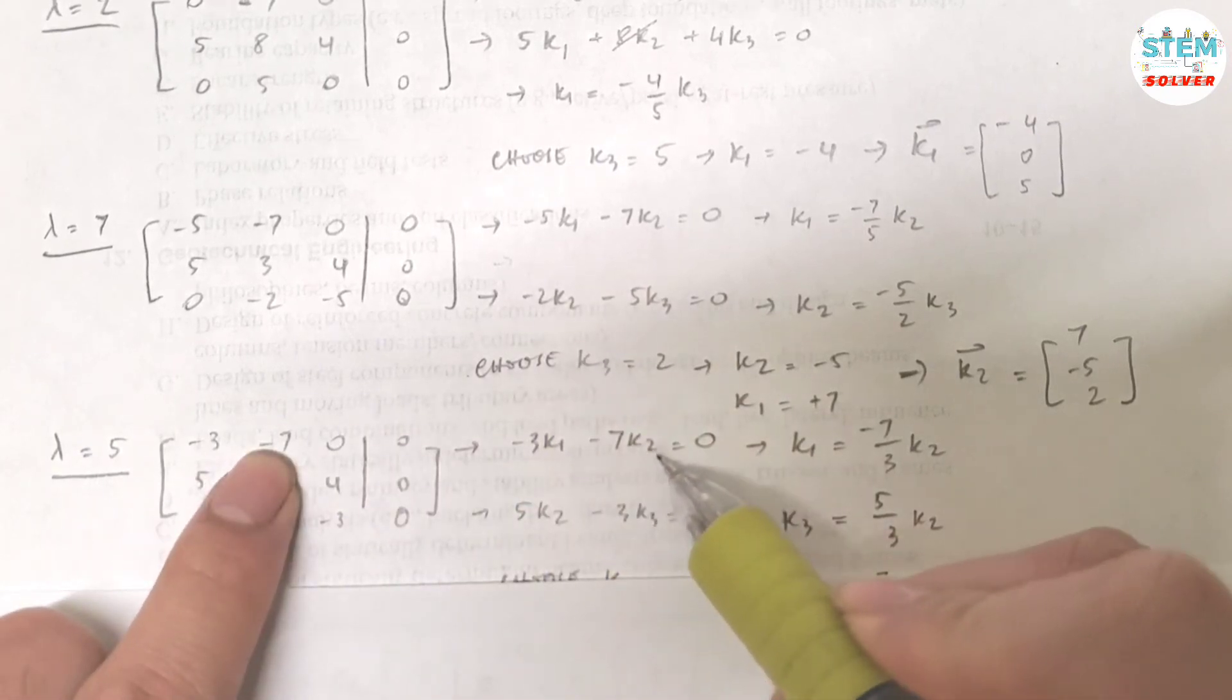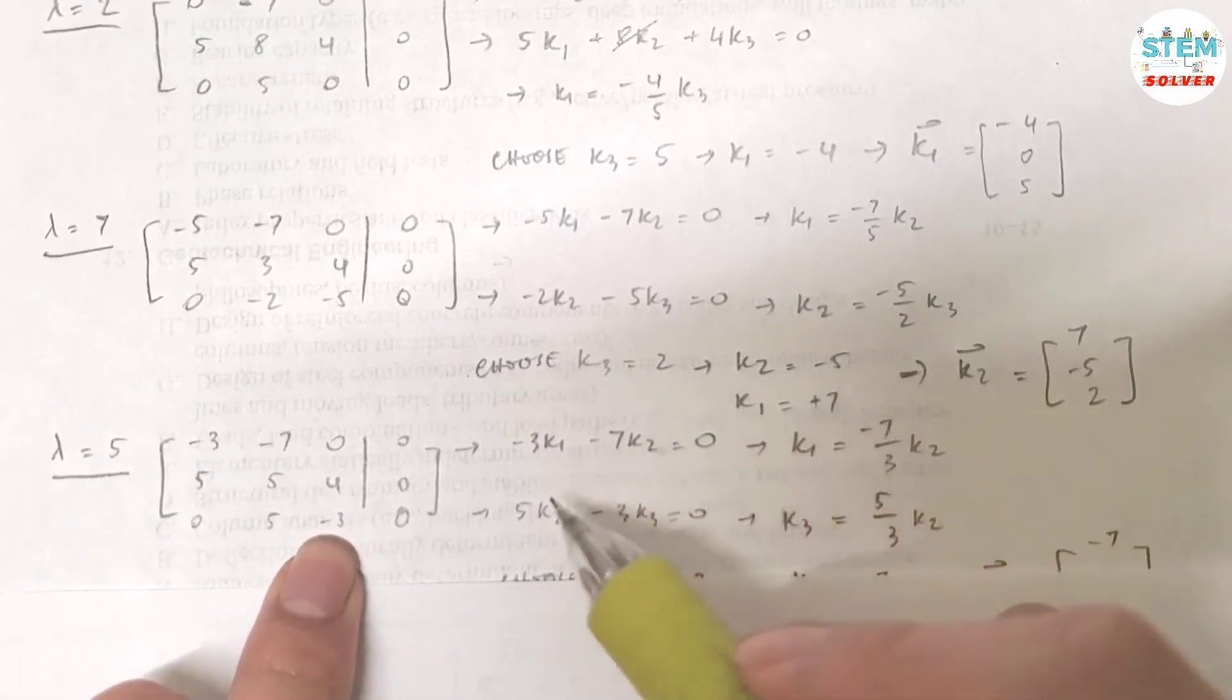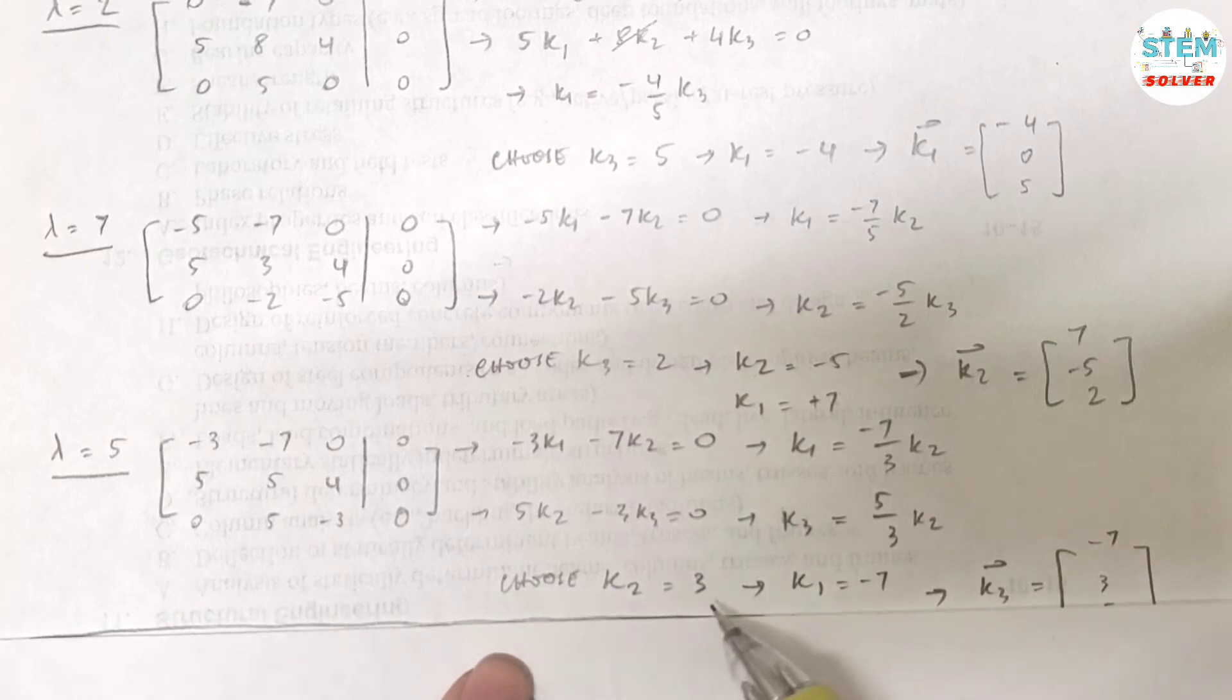Negative 3k1 minus 7k2 equals 0. So solve for k1, I got negative 7 over 3k2. Use the last equation, 5k2 minus 3k3 equals 0. So solve for k3, I got 5 over 3k2.